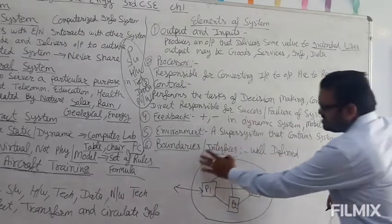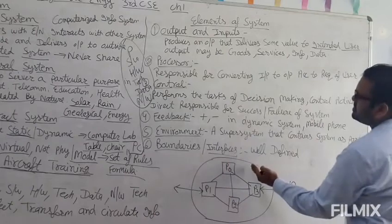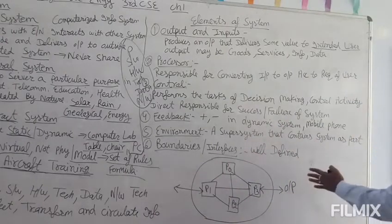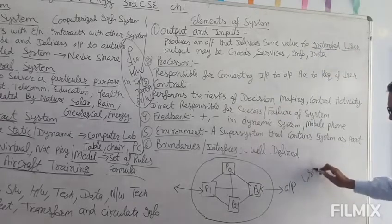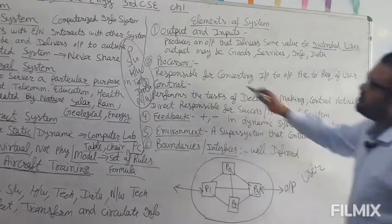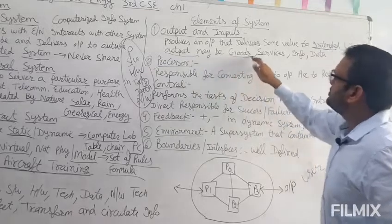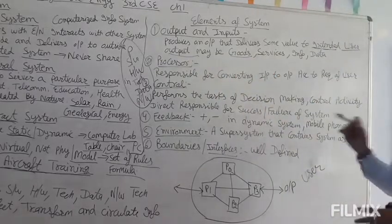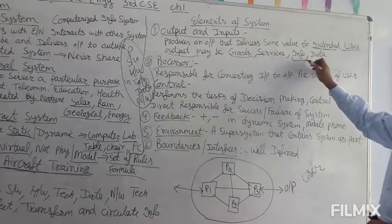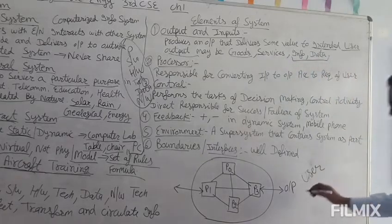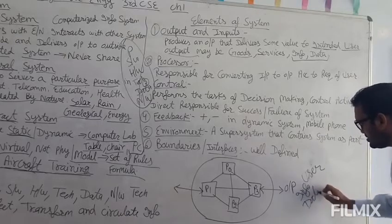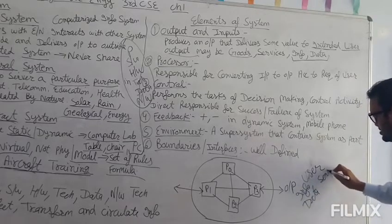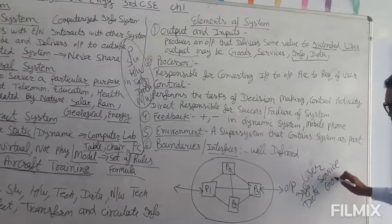A system can deliver some value to the intended user. The output may be some goods, some service, some information, or some data — any type of goods, service, information, or data.